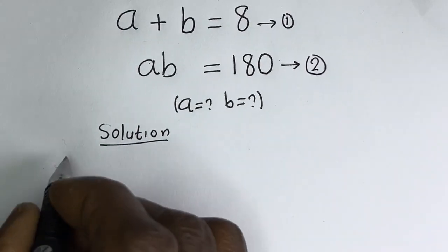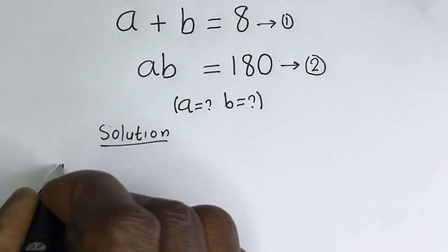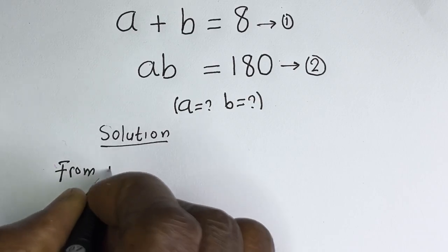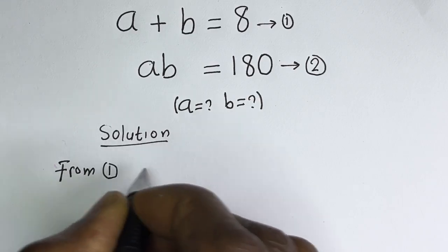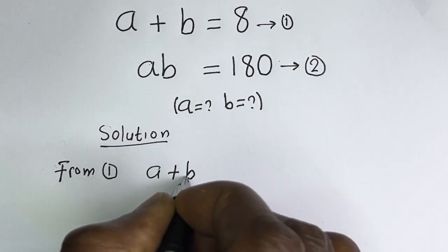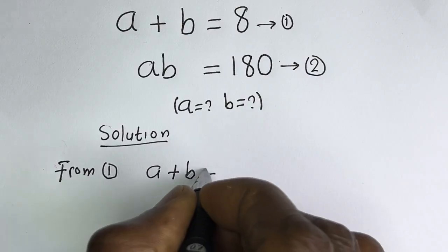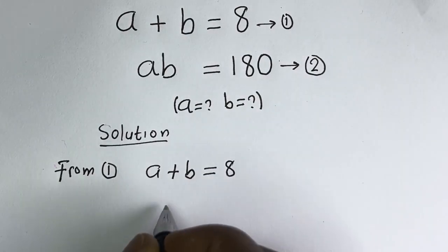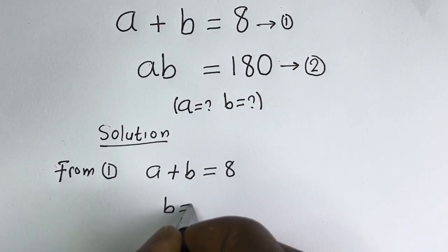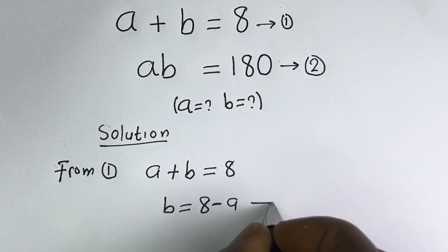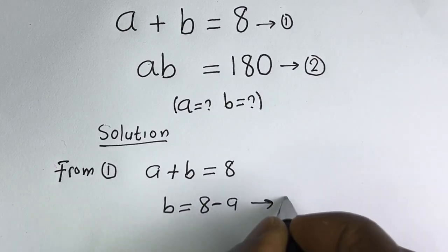Then from equation 1, A plus B is equal to 8, so B is equal to 8 minus A. Let's call this equation 3.